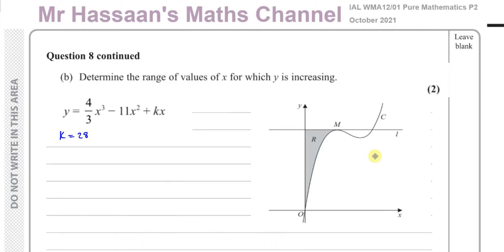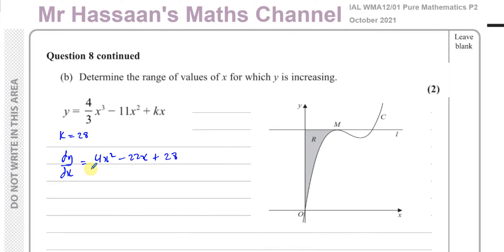A function is increasing when the gradient is positive. We already found dy/dx = 4x² - 22x + 28. We want to find the range of values of x for which dy/dx is greater than zero — that's when it's increasing.